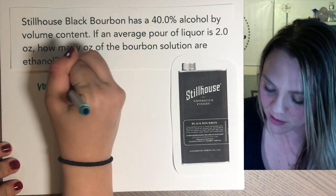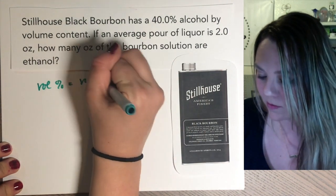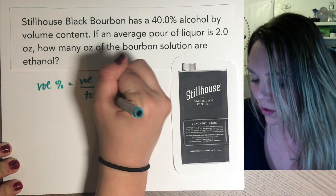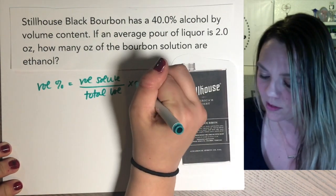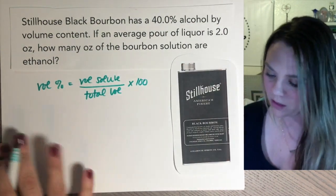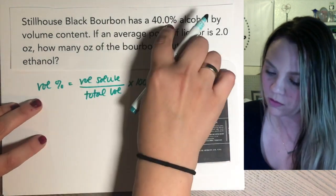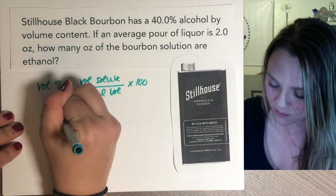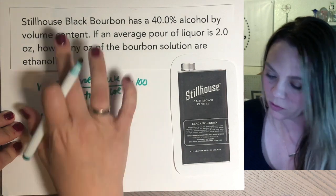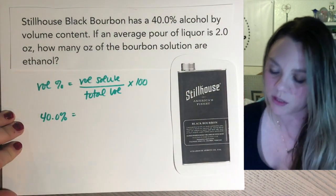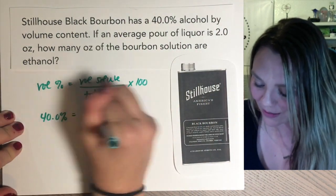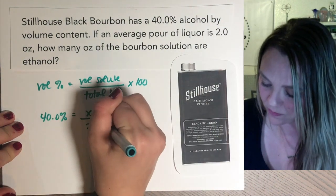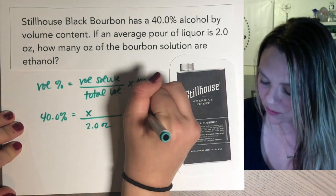Your volume percent is going to be the volume of your solute divided by your total volume times 100. You just plug in what you know: your volume percent is 40. You don't know the volume of your solute — you don't know how much alcohol is in there — so x divided by total volume of 2 ounces, times 100.